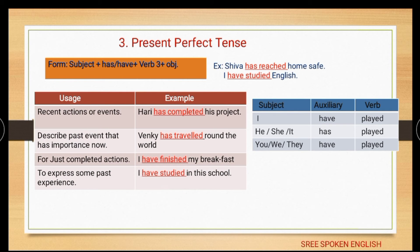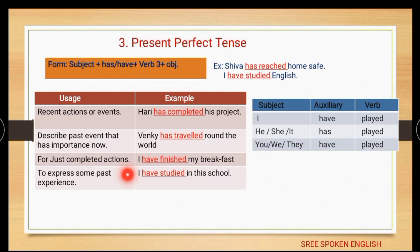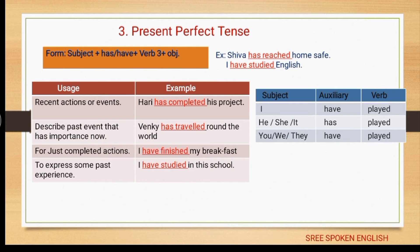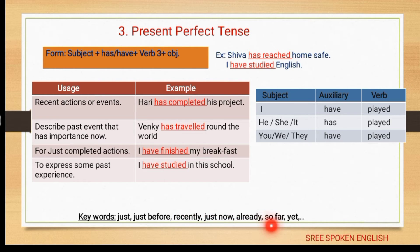When should we use present perfect tense? It expresses recent actions or events: 'Hari has completed his project'. It describes a past event that has importance now: 'Venki has traveled around the world'. It is used for just completed actions: 'I have finished my breakfast'. It expresses past experience: 'I have studied in the school'. Keywords: just, just now, recently, already, so far, at last.